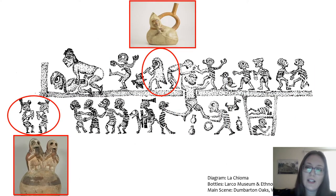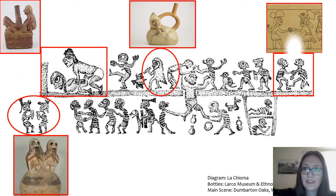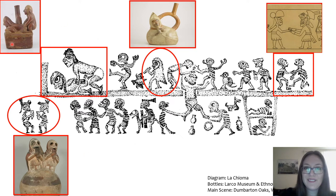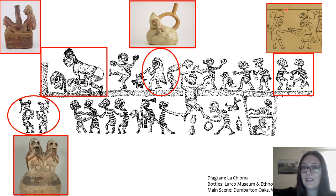In Moche art, all these characters are found in many other bottles, vases, and sculptural forms. The peanut playing the kena is very common in Moche art. Bottles with peanuts playing tubular flutes are very common in Moche art in museums. We can also see the skeleton pan pipe players, like warriors dancing in Moche underworld dances.